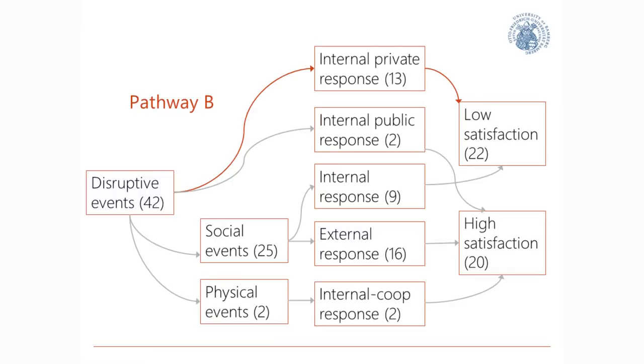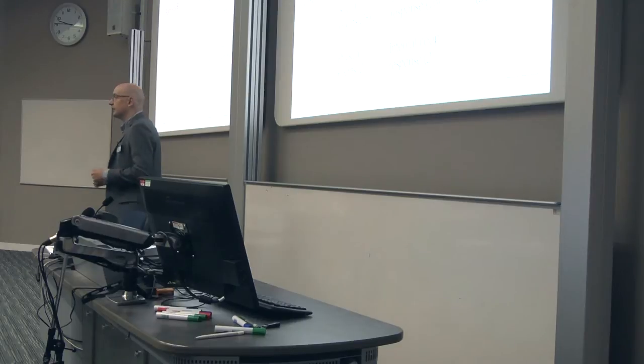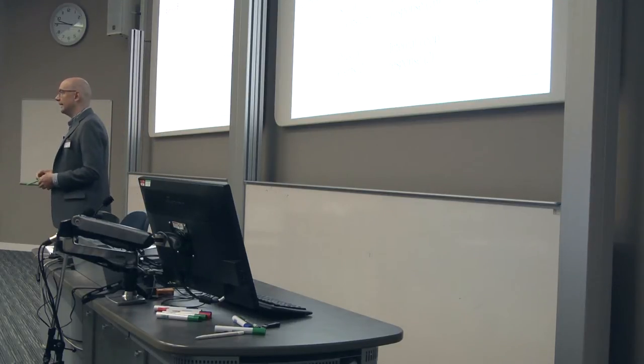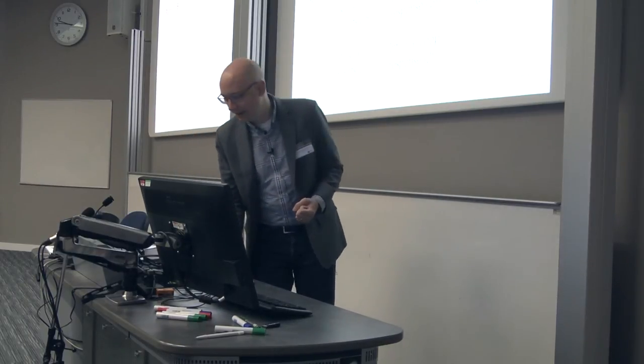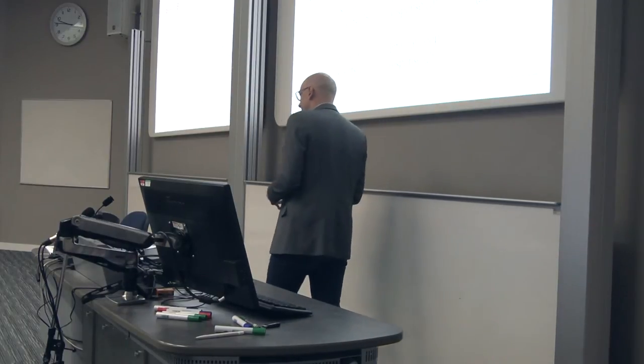Pathway B shows what happens a lot in public-private partnerships: independent of the nature of the event, if the private actor responds with an internal response, it doesn't lead to any satisfaction at all. For example, in a public-private partnership in Rotterdam, the contractor had to come up with a technical solution, the municipality disagreed and sent them back, the contractor made a new solution, still no agreement — and that kept lingering on. What happens in PPPs is that the public agency believes that because they've paid a lot for the contract, they can sit back and do nothing. We can show that really doesn't work.